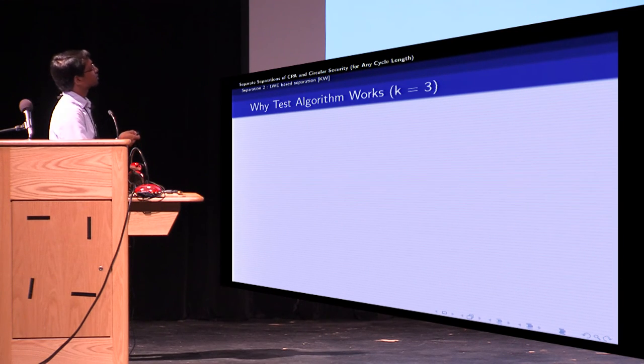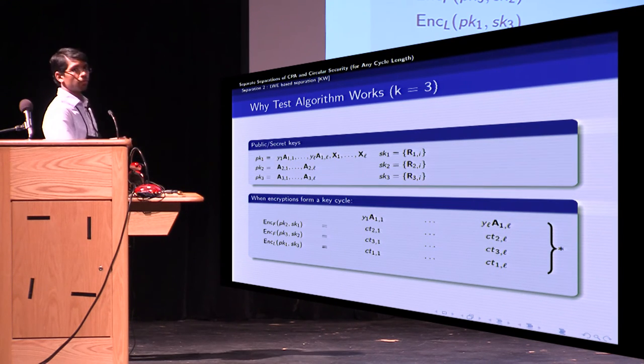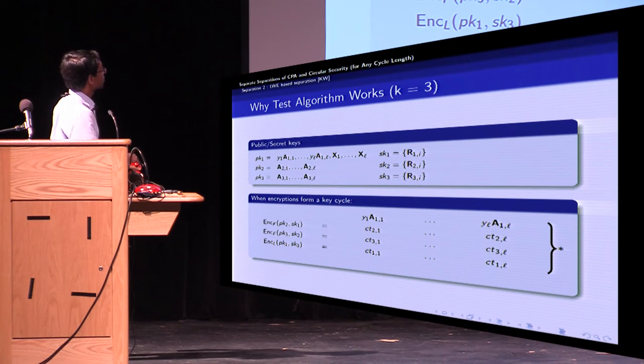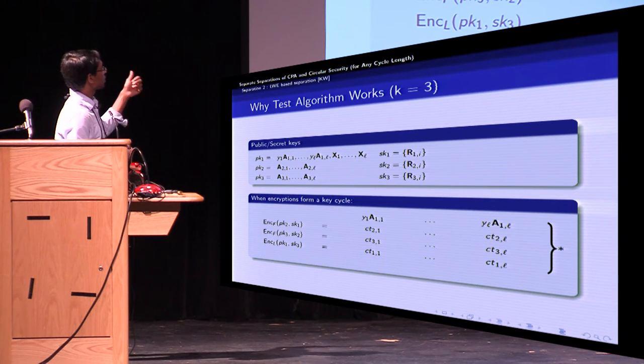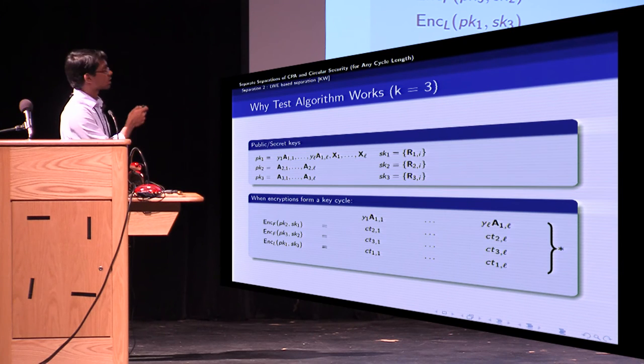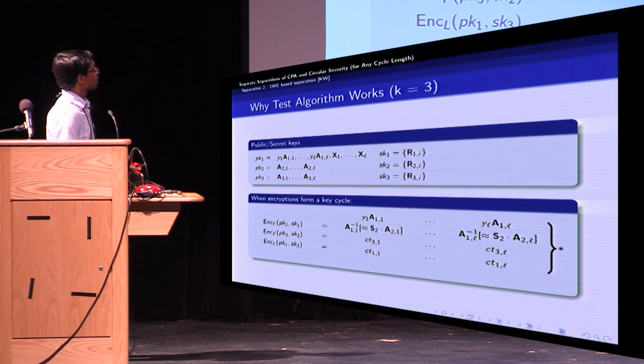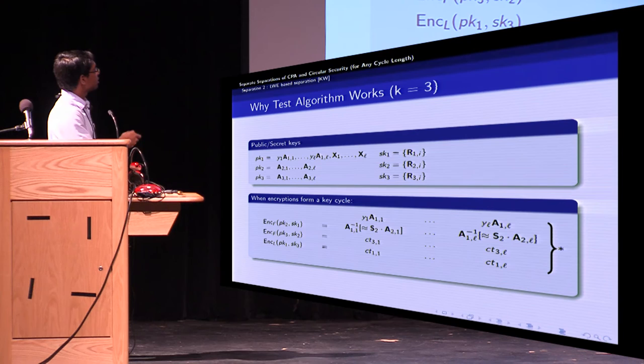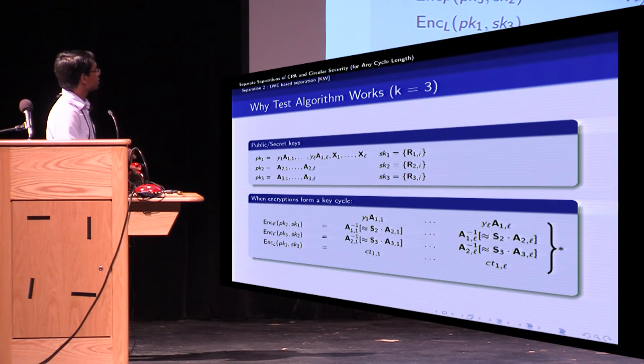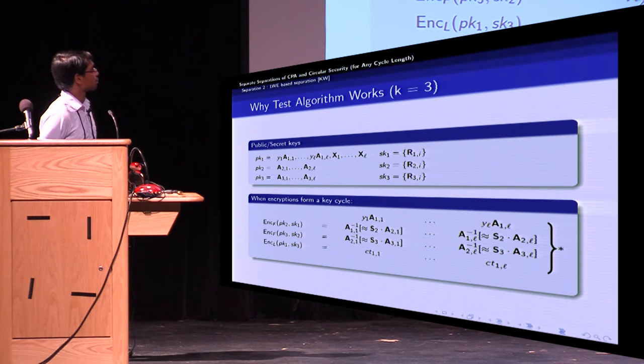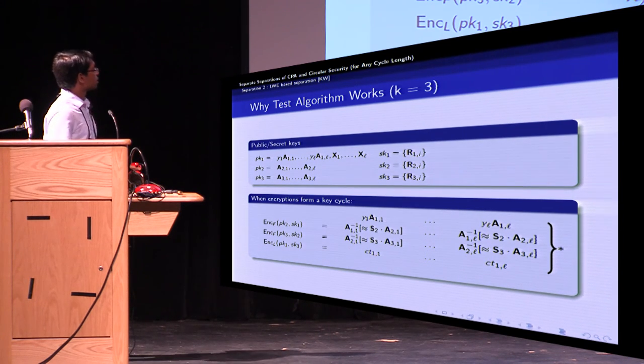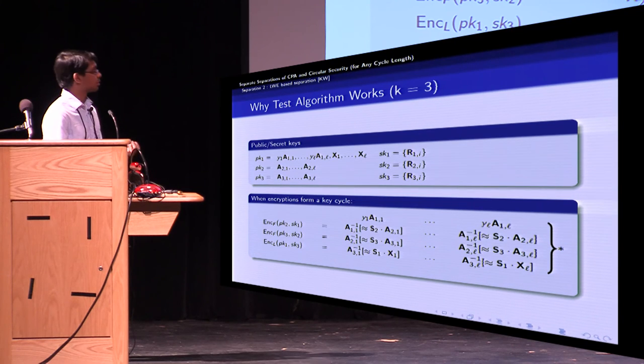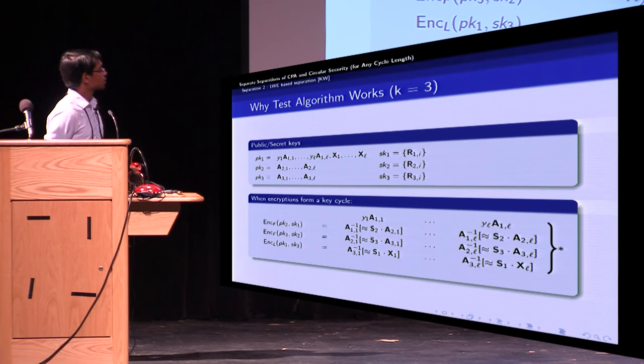To see why this works, let's look at the case for K equals three. And we have the three public keys where the first one is in the leader mode, the remaining two are in the follower mode. So now let's look at the first ciphertext, which is an encryption of SK_1 using PK_2. This is nothing but A_1i inverse of an approximation of S_2 times A_2i. Similarly, the second ciphertext, C_2, consists of components of the form A_2i inverse of an approximation of S_3 times A_3i. The last one is in the leader mode, and it is A_3i inverse of an approximation of S_1 times X_i.